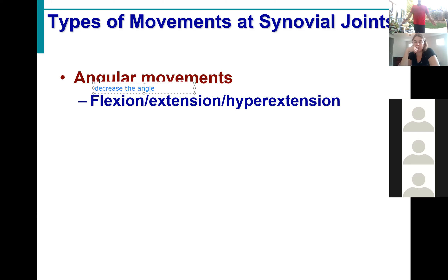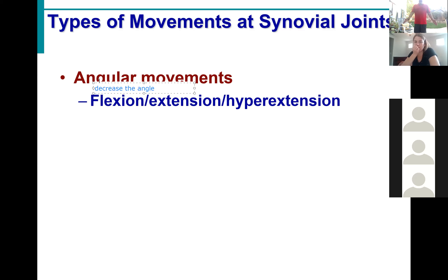Notice one other thing about flexes — all of these flexes go anteriorly. I flex my fingers they go anterior, I flex my elbow it goes anterior, my shoulder goes anterior, head goes anterior, hip goes anterior. Every single flex goes anterior with one exception — the knee. When I flex the knee it goes back. The knee is the only exception; when it flexes it goes back.